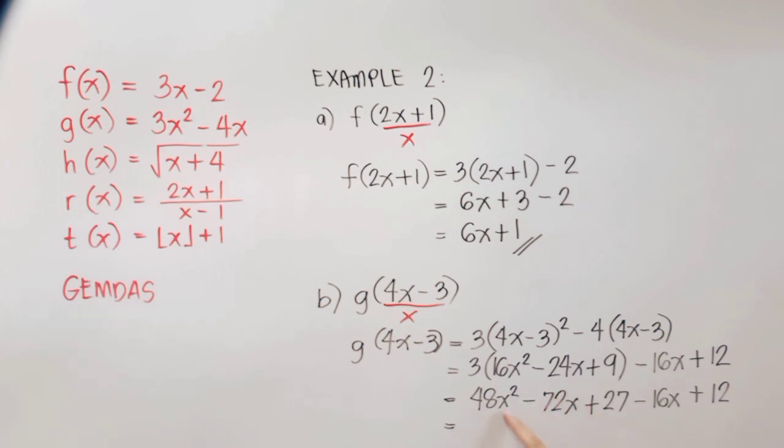Now we have here x squared, and there's no other x squared in these terms. So we'll simply copy 48x squared. Negative 72x and negative 16x are like terms, so we can still add them up. So that's negative 88x, and then 27 plus 12, that is equal to 39. This is our final answer.